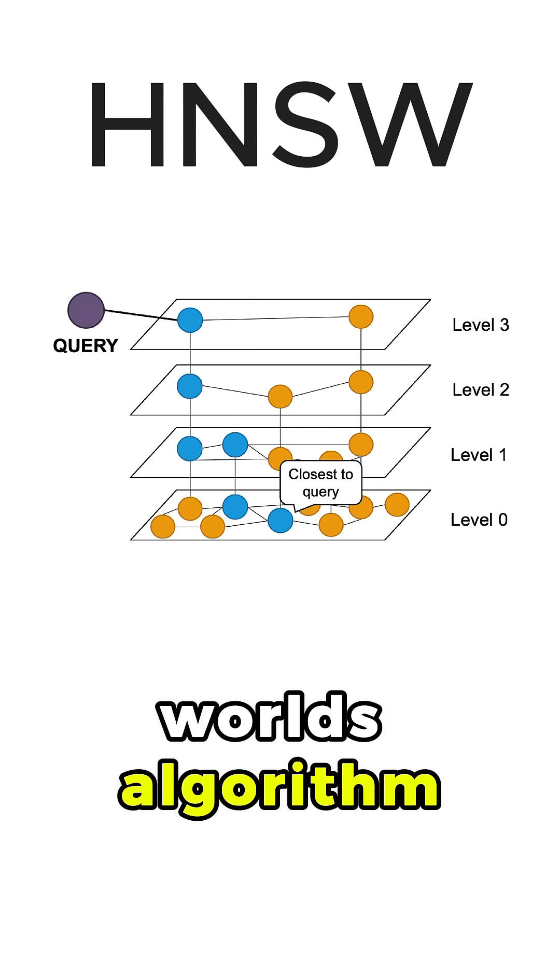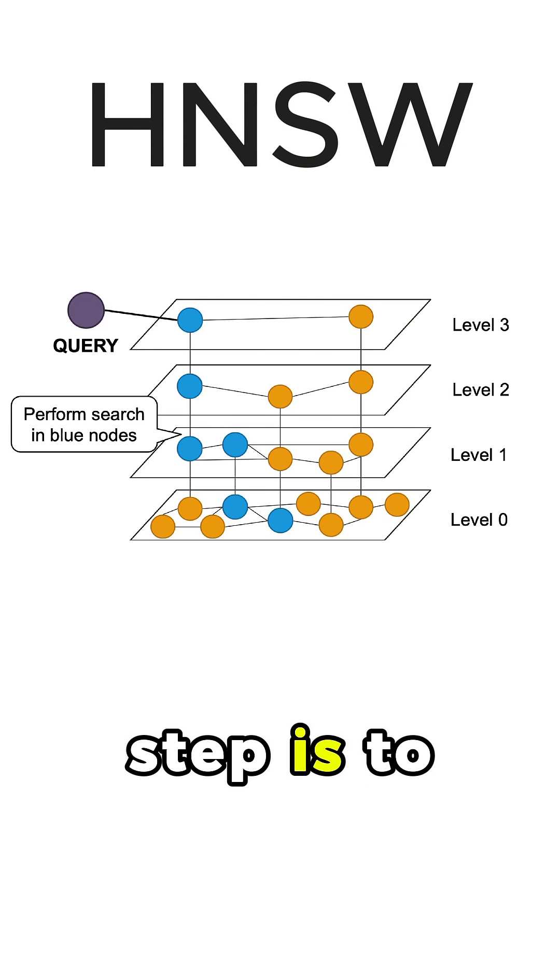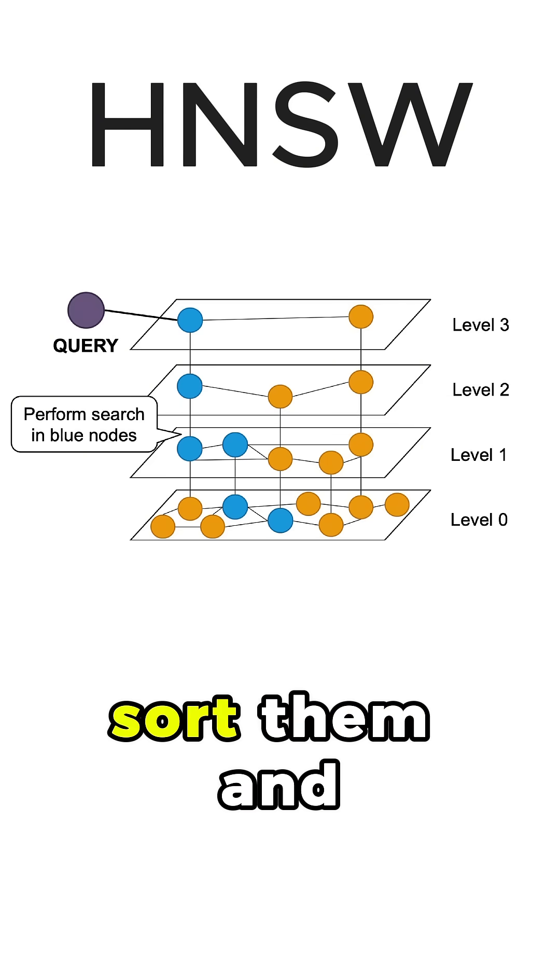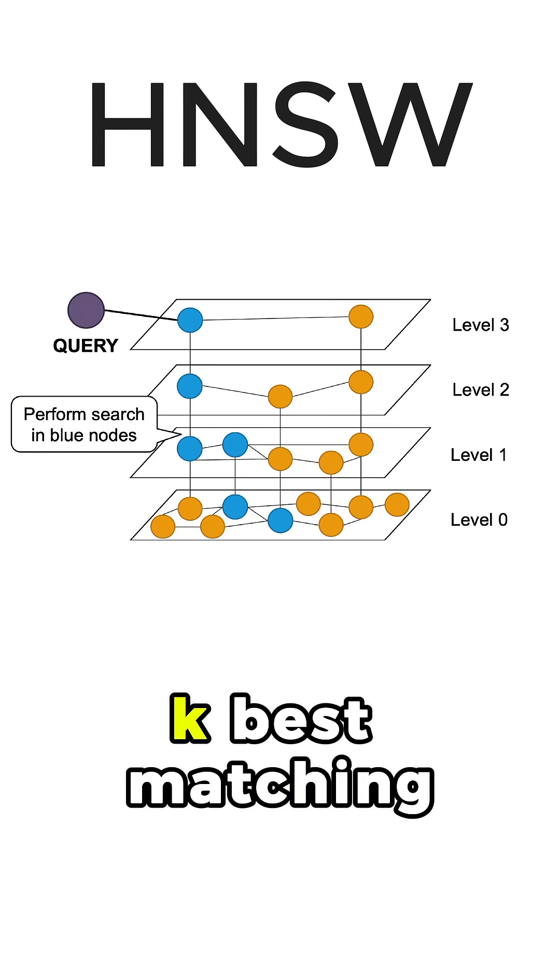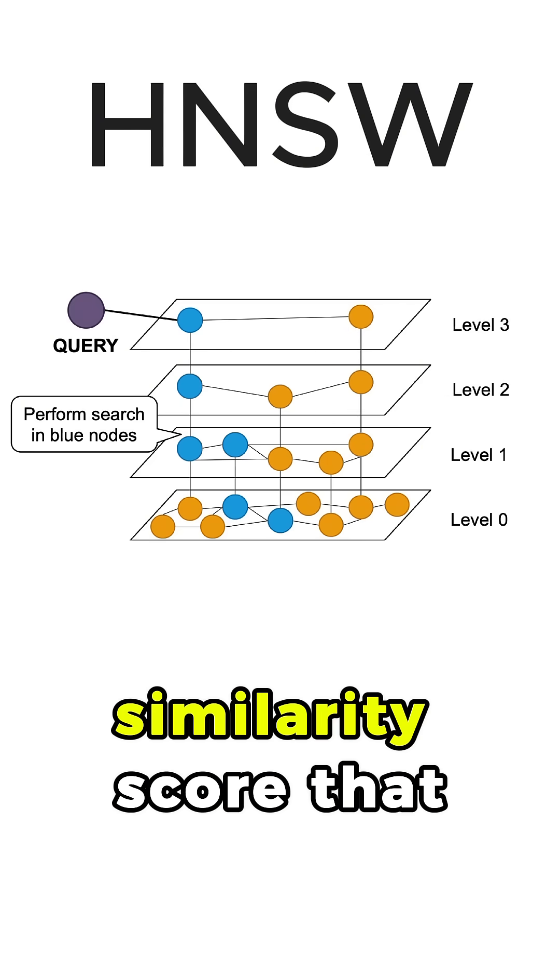Now, as in the navigable small worlds algorithm, the final step is to take all these vectors that we have visited, sort them, and return the top k best matching based on the similarity score that we are using.